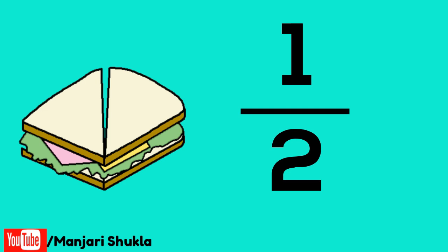Let's head for another example. Let's take a sandwich with two parts. This sandwich will be called 1 by 2. And if we take out one part of the sandwich, it will be known as half of the sandwich is gone.